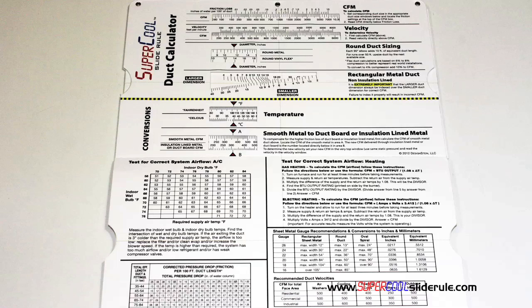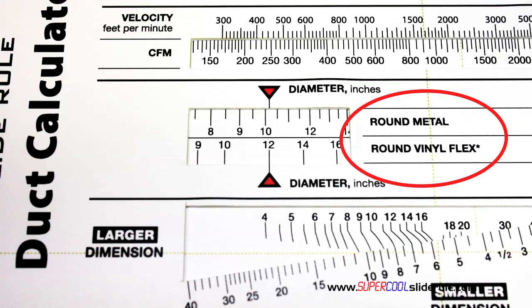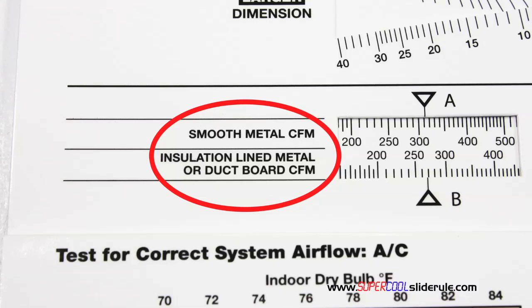Inside is packed with even more information. It performs sizing of both metal and flexible duct. It has the only direct reading conversion from smooth metal to insulation-lined metal we've ever seen.